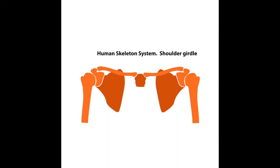The shoulder or pectoral girdle is composed of two sets of bones on both sides of the body: the clavicles and the scapula. Each clavicle articulates at the top of the shoulder with the acromion process of the scapula, and this is called the AC joint — the acromioclavicular joint. It's a gliding synovial joint. Each scapula is secured in place by the muscles of the back and shoulder, giving incredible mobility to the whole shoulder girdle. There is a depression called the glenoid cavity, found at the top of the scapula, and this forms the socket that the head of the humerus fits into, creating a synovial ball and socket joint.